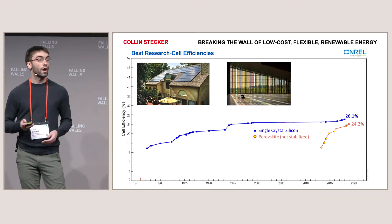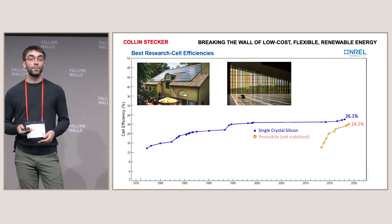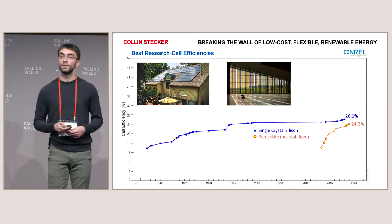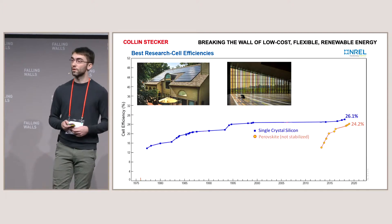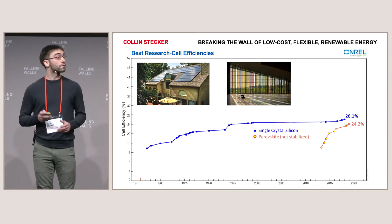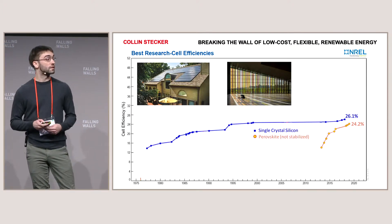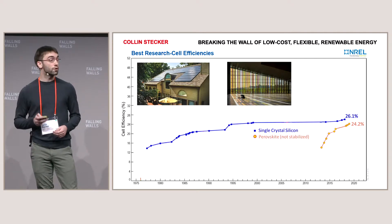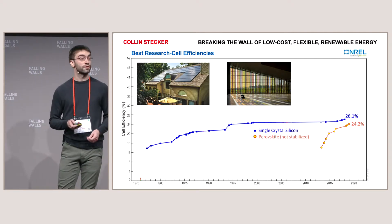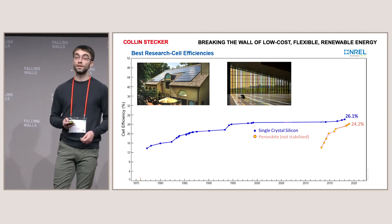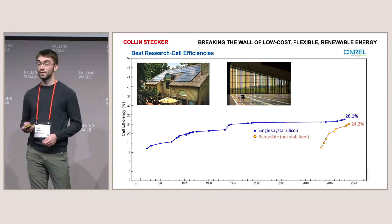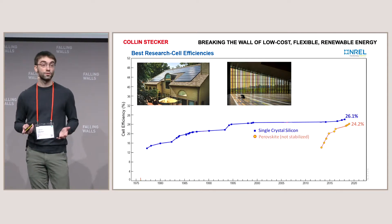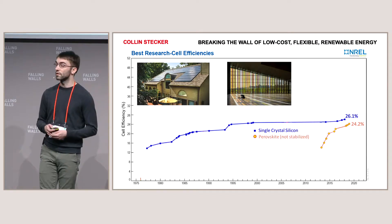A low-cost, flexible material called perovskite has made impressive gains in efficiency compared to market-leading silicon-based solar cells. However, further work is needed to match silicon's efficiency, and more critically, the perovskite material's instability is a major hurdle towards commercialization. After all, who wants to replace their curtains twice a year?